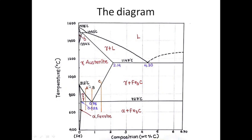The carbon range for steel is up to 2.14 weight percentage carbon. To observe microstructures, we can discuss three different reactions: Reaction A, Reaction B, and Reaction C. Reaction A passes through gamma austenite, then the alpha plus gamma zone, and then the alpha plus Fe3C zone on cooling. Reaction B goes from gamma austenite directly to the alpha plus Fe3C zone on cooling.